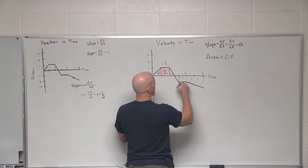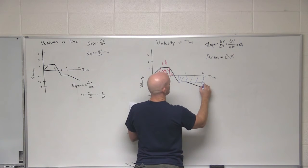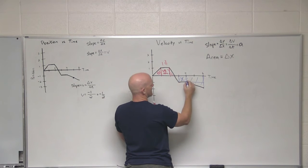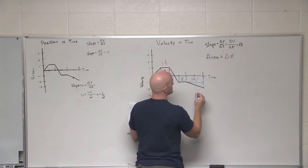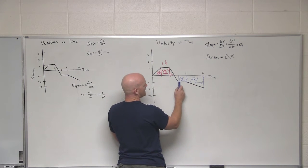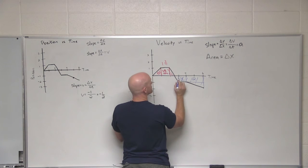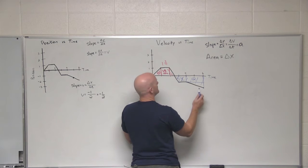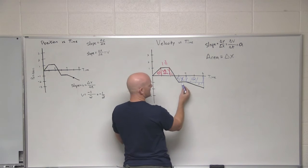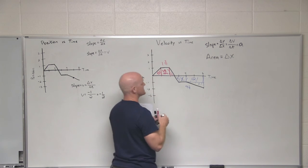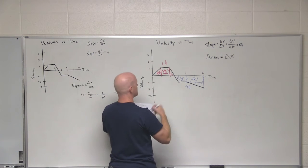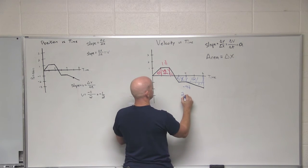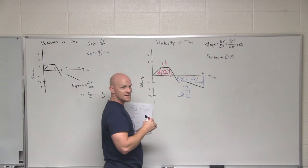For the negative displacement region, there's a triangle, a square, a triangle, and a rectangle. The square (1×1) has area one, the rectangle (1×2) has area two, a small triangle has area one quarter, and the larger triangle (½×2×1) has area one. That totals four and a quarter for negative displacement. Taking the difference, four and a quarter minus one and three quarters gives an overall net displacement of negative two and a half.